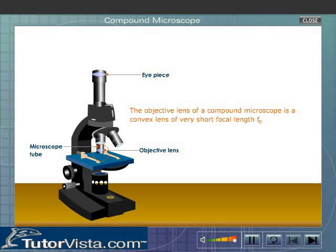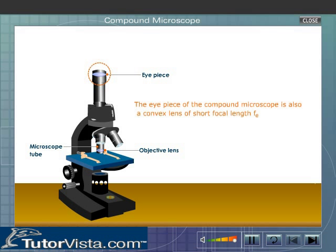The objective lens of a compound microscope is a convex lens of very short focal length f_o. The object to be viewed is kept very close to the objective lens. The eyepiece of the compound microscope is also a convex lens of short focal length f_e. The focal length of the eyepiece is slightly greater than that of the objective lens.